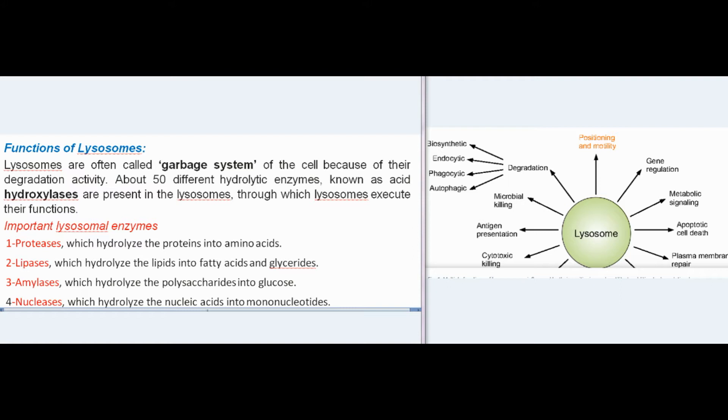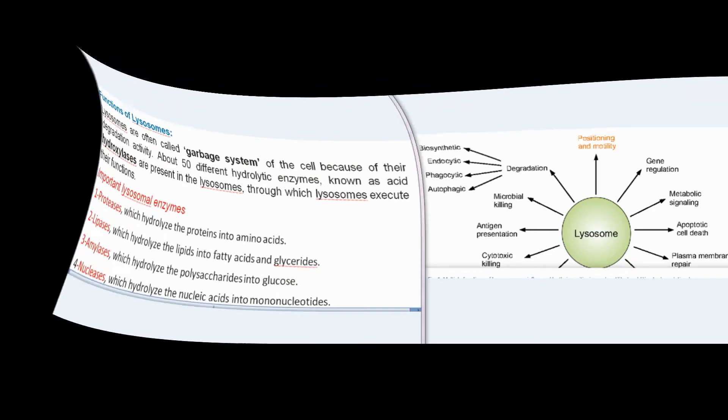Important lysosomal enzymes include: proteases, which hydrolyze proteins into amino acids; lipases, which hydrolyze lipids into fatty acids and glycerides; amylases, which hydrolyze polysaccharides into glucose; and nucleases, which hydrolyze nucleic acids into mononucleotides.